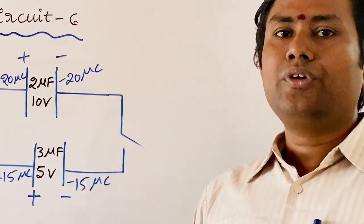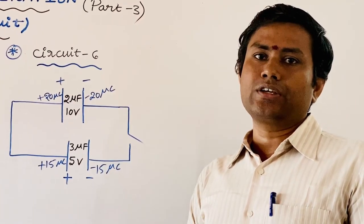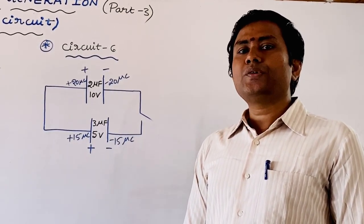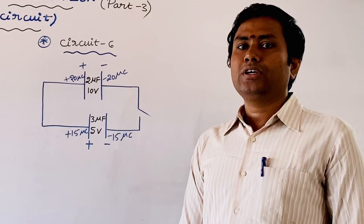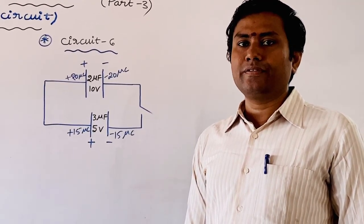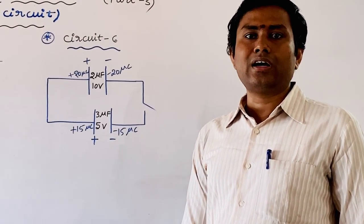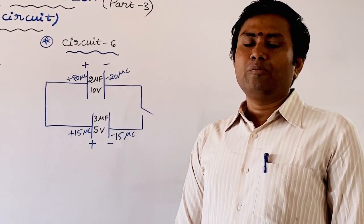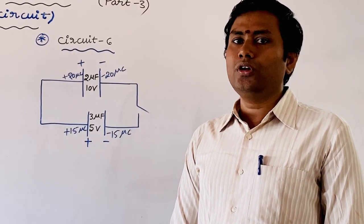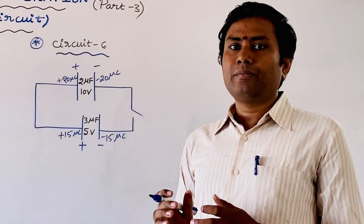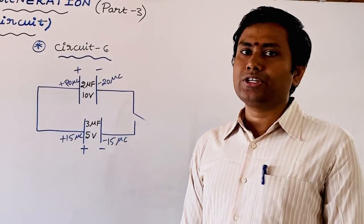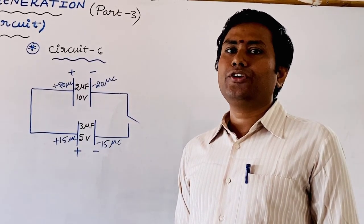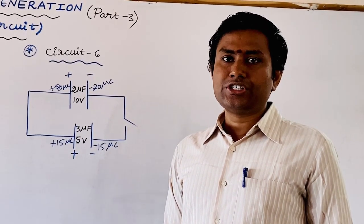To calculate the heat energy generated in this type of circuit, we will use the loop rule. The loop rule states: if you traverse any loop in the circuit, the sum of all potential differences around that loop is always equal to zero. This is based on the law of conservation of energy.